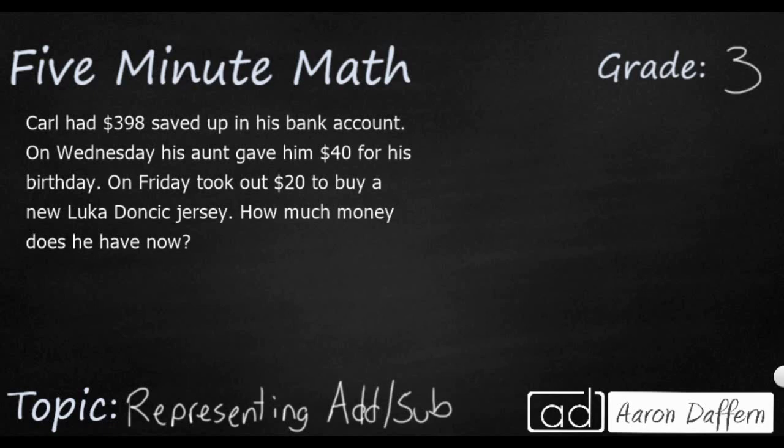So we have a simple problem over here. Carl has got $398 saved up. His aunt gives him, so that means he's going to add another $40, then he's going to take out, which means he's going to subtract $20 to buy a new Luka Doncic jersey. So how much money does he have right now? Well, let's see if we can set up our equation first. We're going to set it up side by side because we need to make sure we have the correct operations.